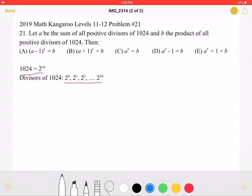Let's start by finding what A is. A is the sum of all positive divisors of 1024, which means that A would be equal to 2 to the 0 plus 2 to the 1st plus 2 to the 2nd, until we add 2 to the 10th.